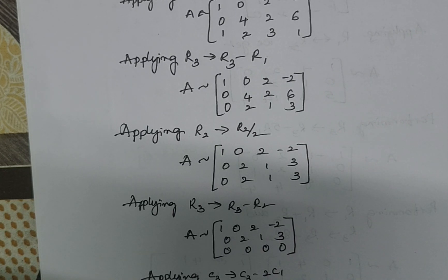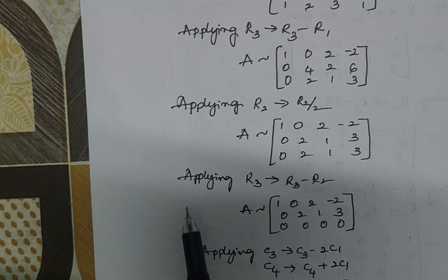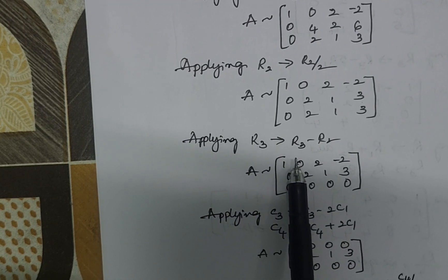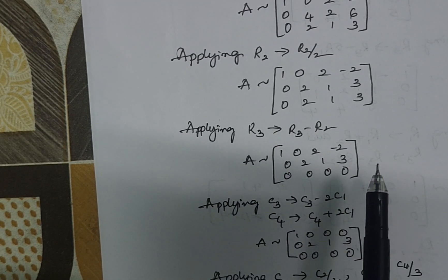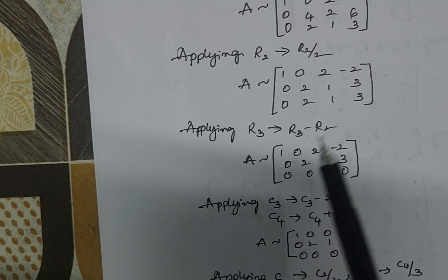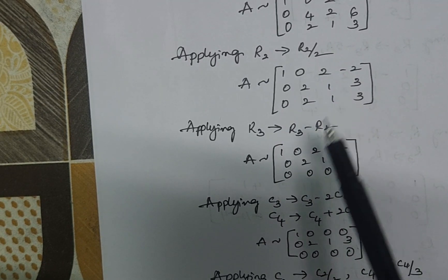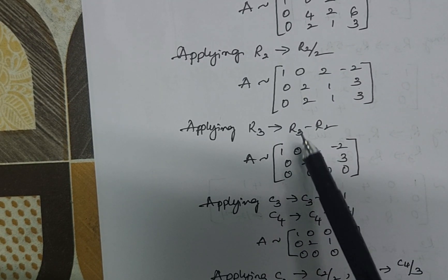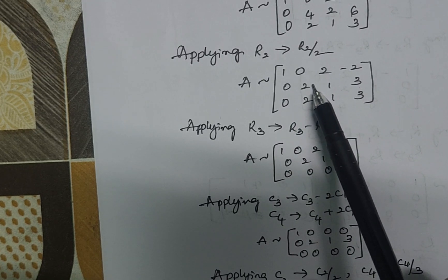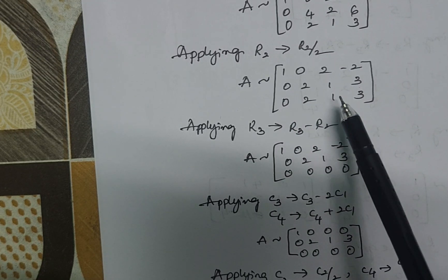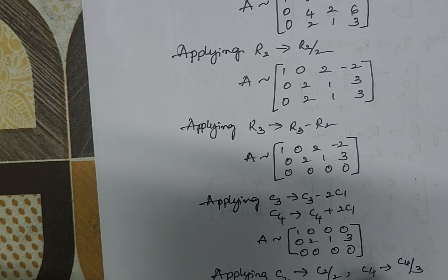Now applying R3 → R3 - R2. The first two rows remain as they are. R3 - R2 gives: 0, 2 - 2 = 0, 1 - 1 = 0, 3 - 3 = 0. Our aim is to make all the elements in the third row zeros to reduce it to normal form.